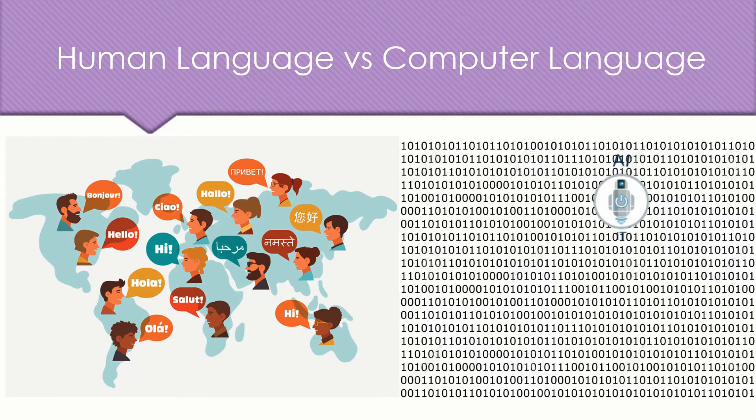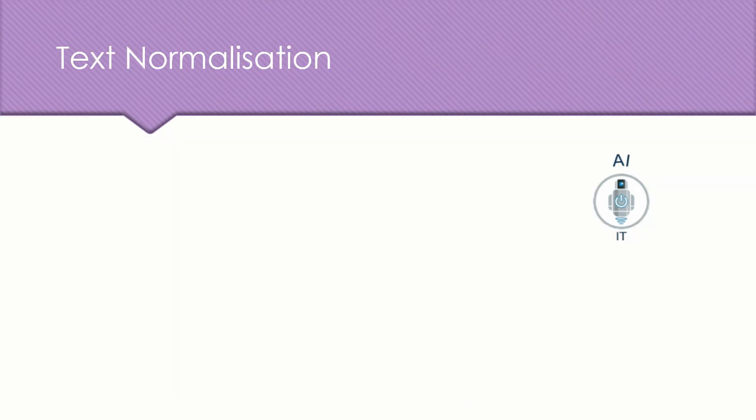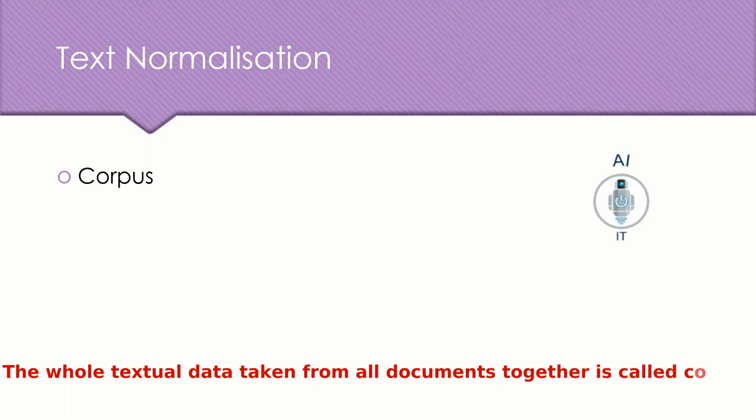The first step to simplify this is text normalization. Now, text normalization helps in cleaning up the actual textual data in such a way that it comes down to a level where the complexity is much, much lower than the actual data. Before we begin, let us understand the term corpus. Now, we have a lot of documents that are put together and this is going to be taken for processing. The whole textual data taken from all documents together is what we call the corpus.